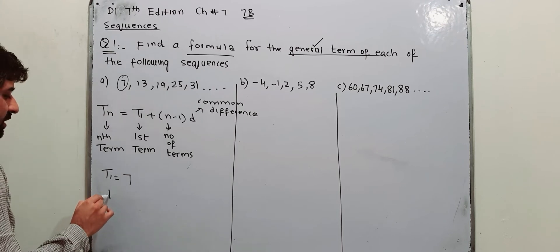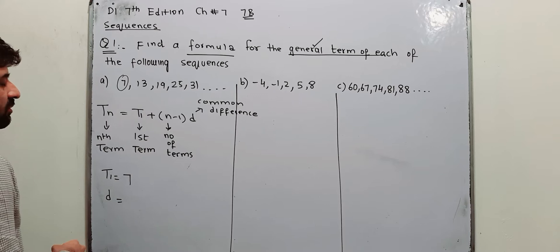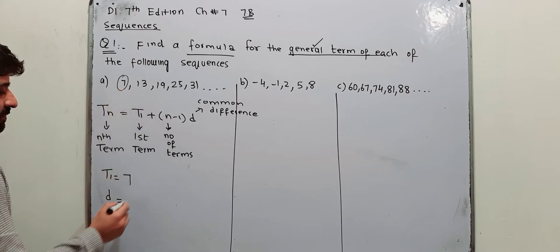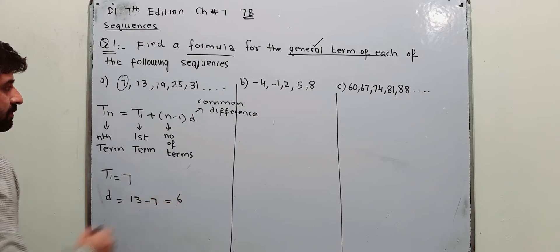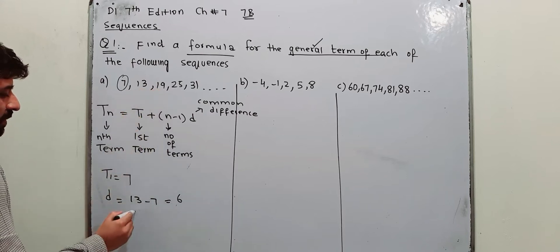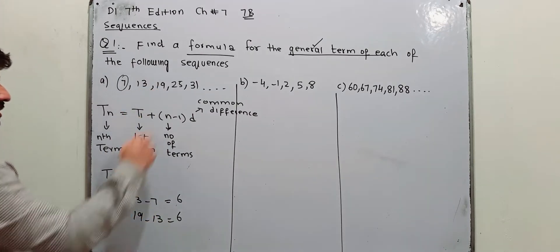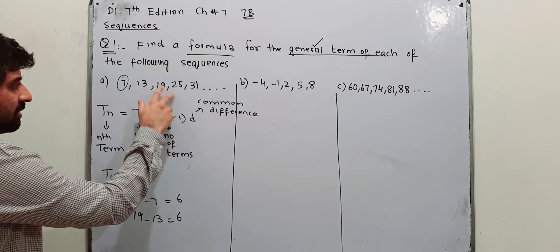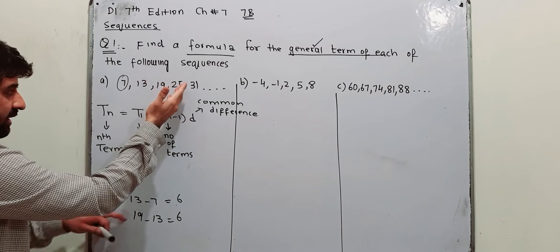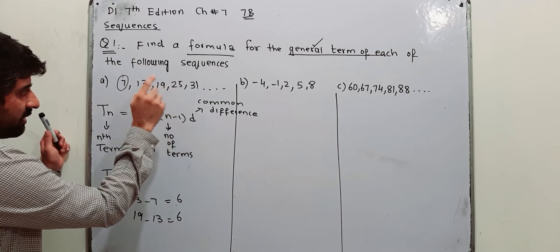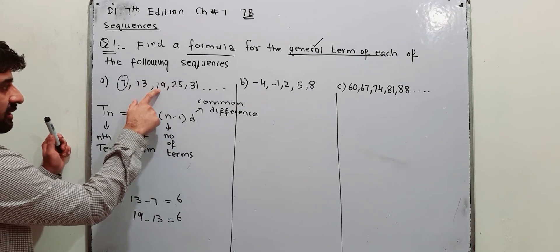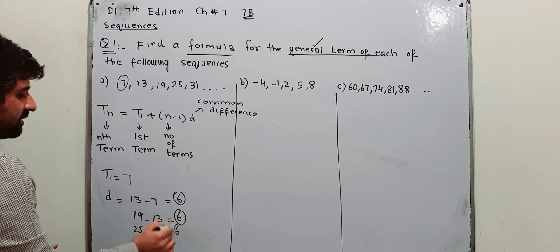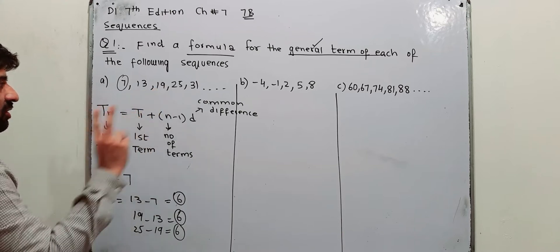The concept of D is common difference. Common difference means you have to subtract two consecutive terms — any two consecutive terms. For example, 13 minus 7 gives 6, or 19 minus 13 gives 6, or 25 minus 19 also gives 6. The terms should be consecutive, and you have to subtract the earlier term from the next term — so 25 comes first, then 19 is subtracted from 25. That's why it is known as common difference.